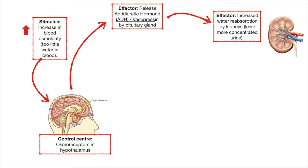Our kidneys are responsible for producing urine by filtering our blood and reabsorbing back into our circulatory system a lot of the things we don't want to get rid of — we reabsorb nutrients and water. A big part of urine production is reabsorption; if we didn't reabsorb most of the water that goes into our kidneys, we would be losing most of our water. Antidiuretic hormone increases the reabsorption of water by our kidneys, which results in less urine production and more concentrated urine.